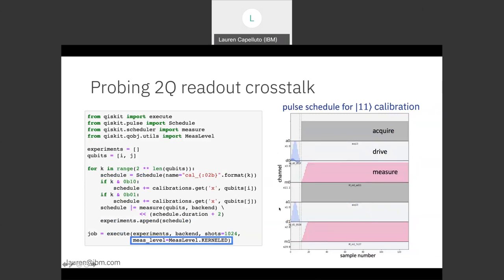Again, it only takes about a dozen lines of code to set up this entire experiment. So the important thing to note in this Qiskit code here on the left is that we're using kerneled measurement levels.